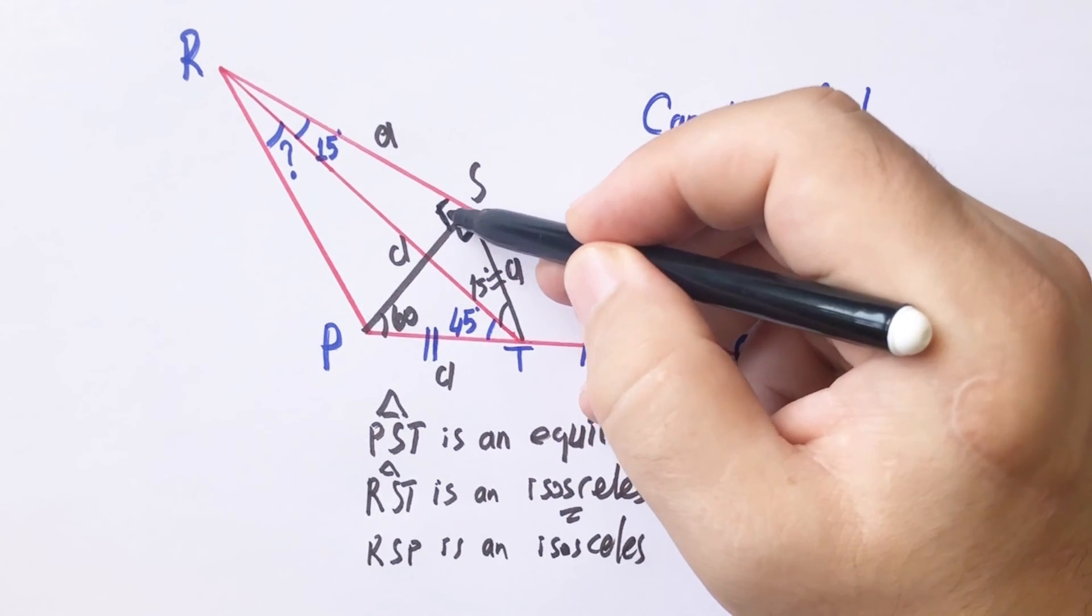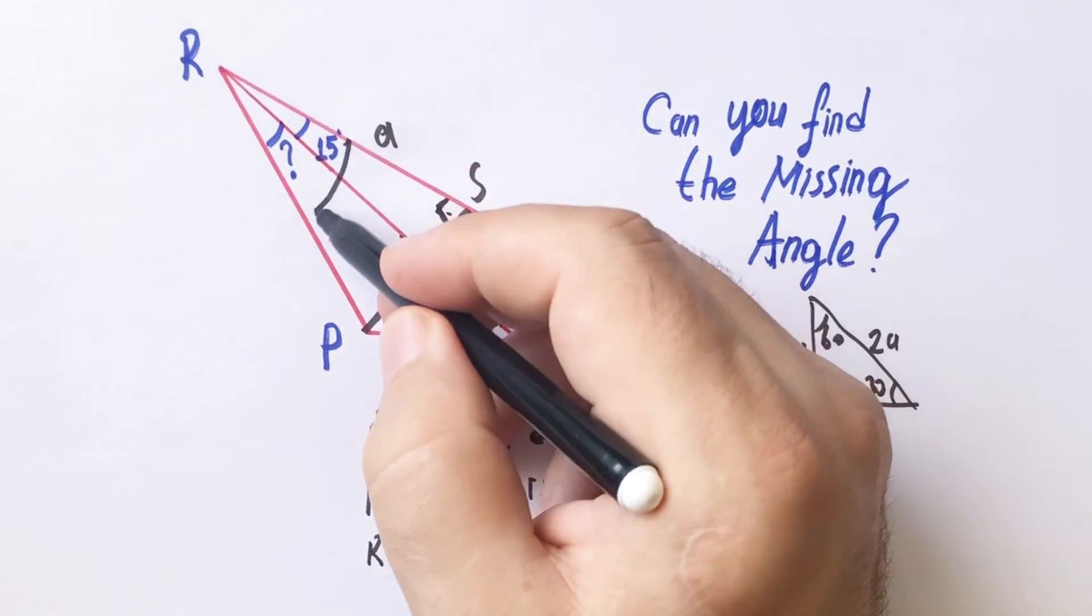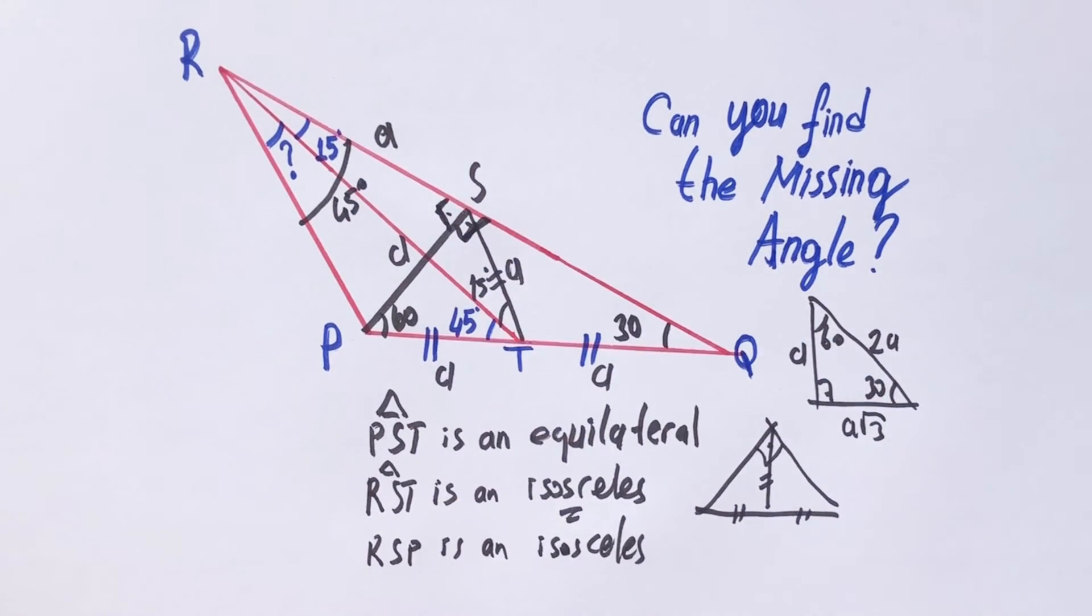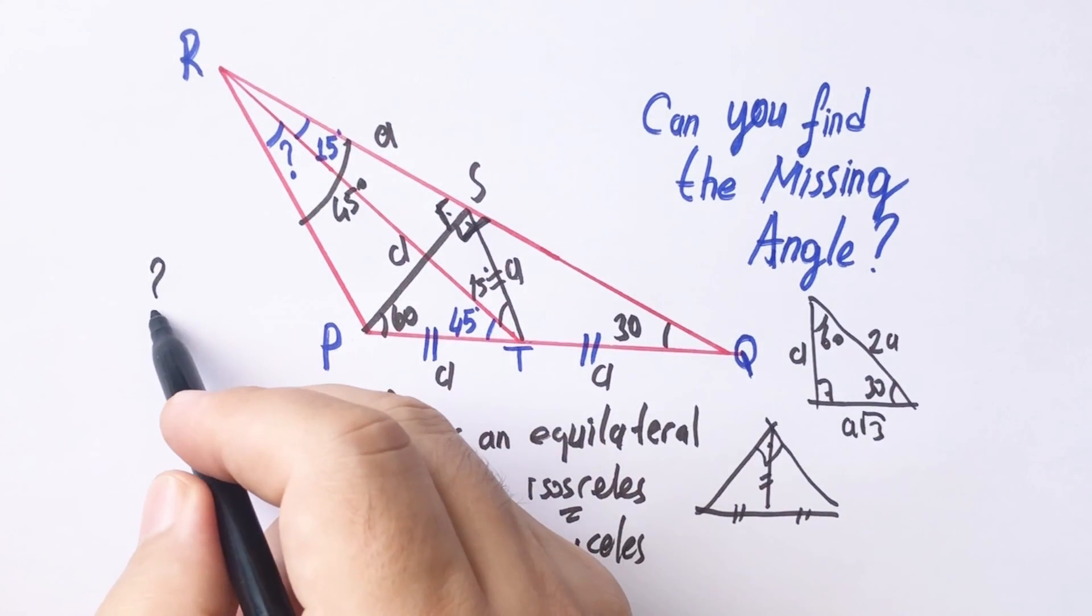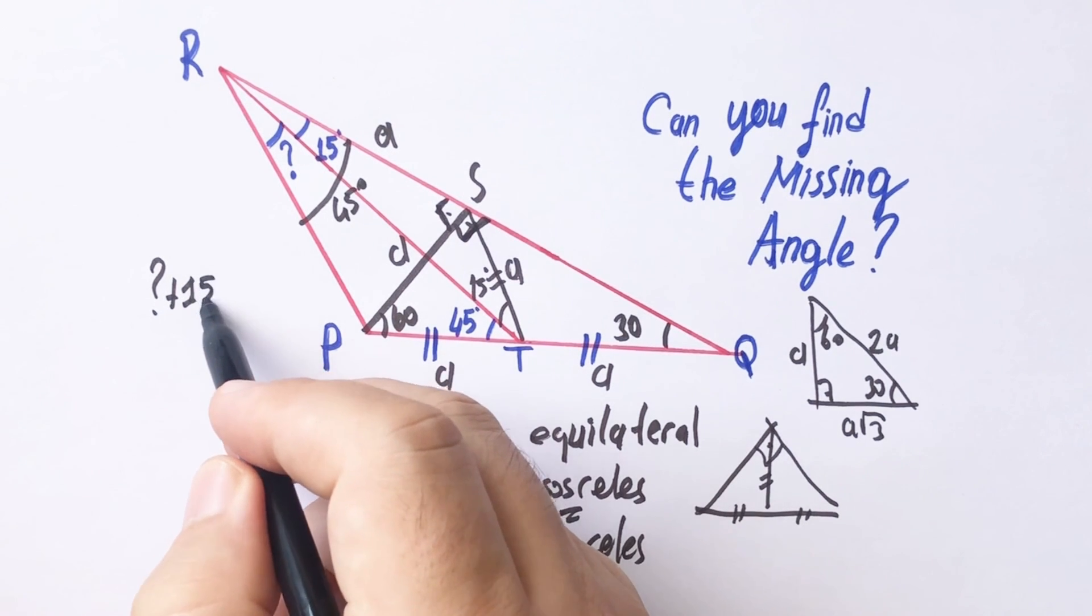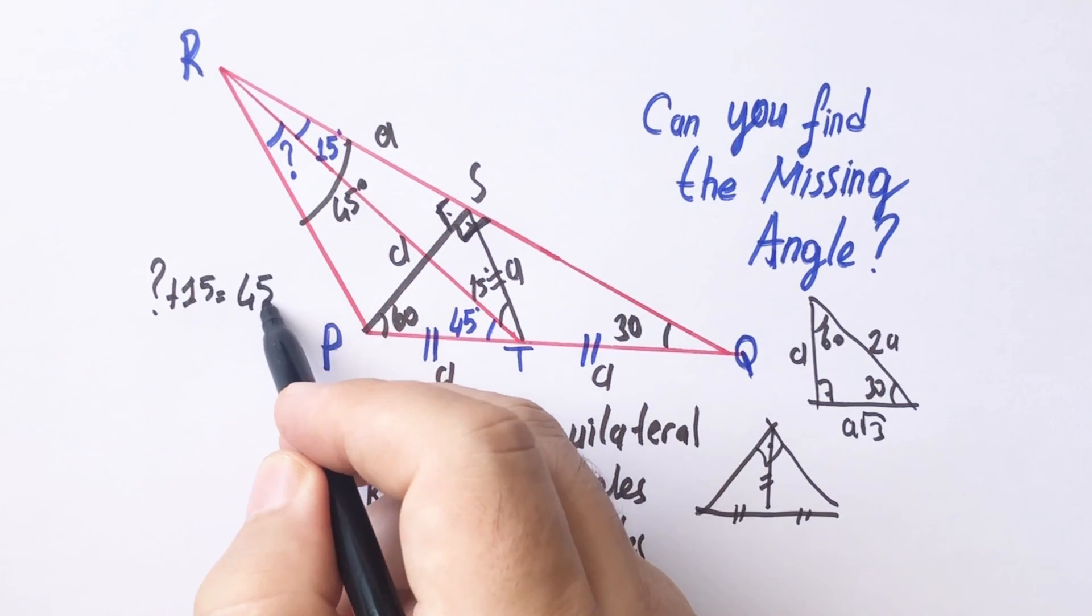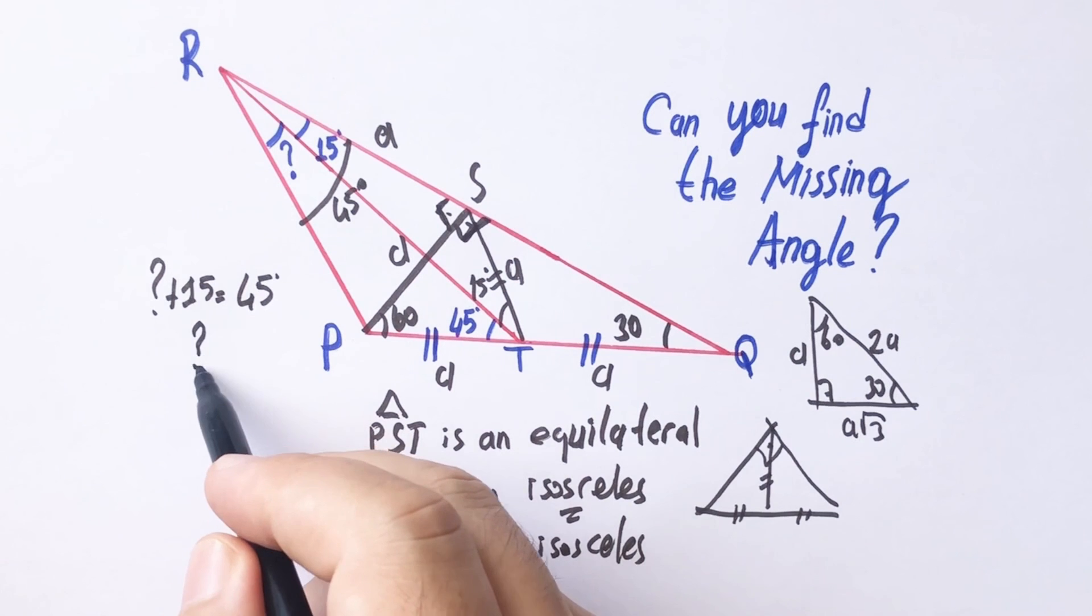It is 90 degrees, the base angles are 45 degrees. Finally, the missing angle is going to be 30 degrees.